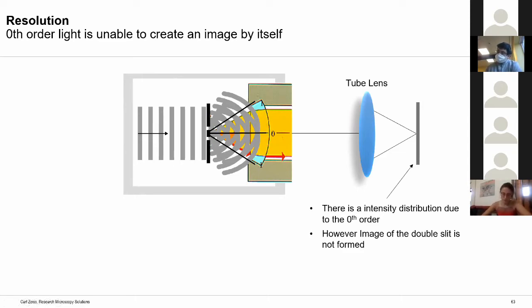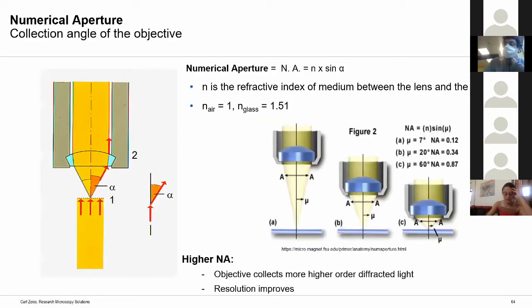This starts to explain several things. Why does resolution depend on wavelength? Because shorter the wavelength, smaller the diffracted angle between the zeroth order and higher diffracted orders. For a given numerical aperture, a smaller wavelength can resolve more. Similarly, for a given wavelength, a higher numerical aperture means you can collect light at a larger angle — an objective with higher numerical aperture collects more diffracted orders at larger angles. So for a given wavelength, an objective with larger numerical aperture will resolve better.